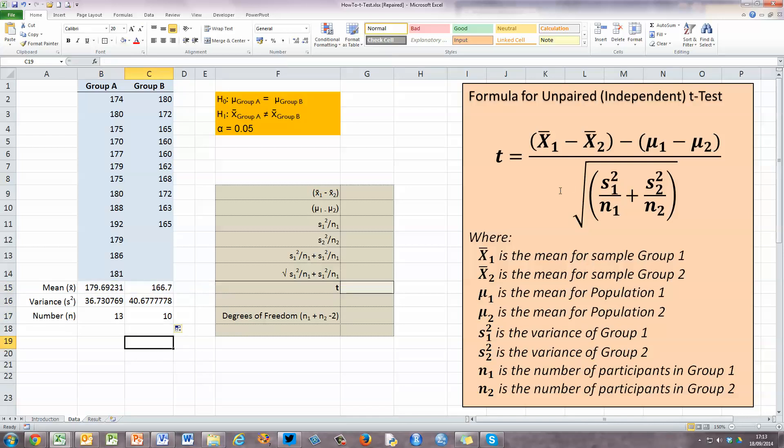So now I've got all the values that I need to plug into my formula over here on the right hand side. So let's build this formula up step by step. First of all, here in cell G9, I need to calculate the difference between the means. You can see in the formula, I need to calculate X̄₁ minus X̄₂, so that's very straightforward. I'm just going to do equals, click on the mean in cell B15, minus the mean in cell C15, and that's going to give me the difference between the means.